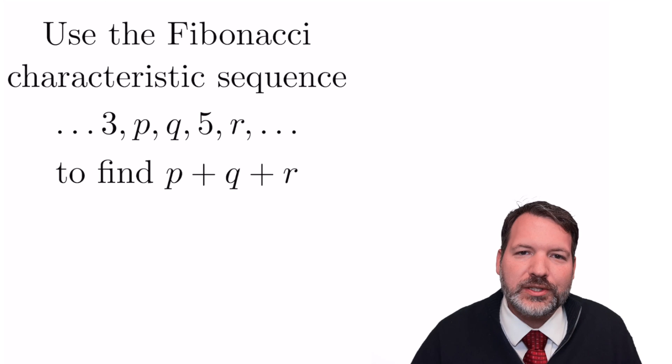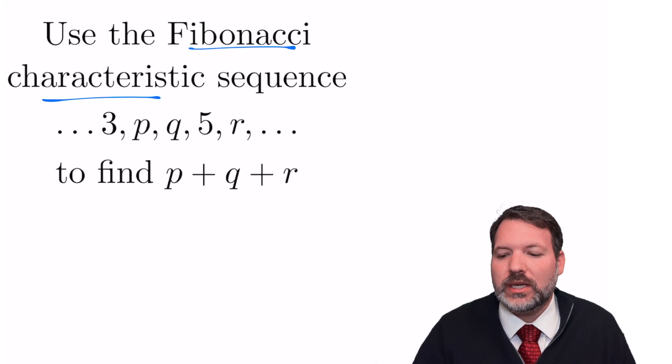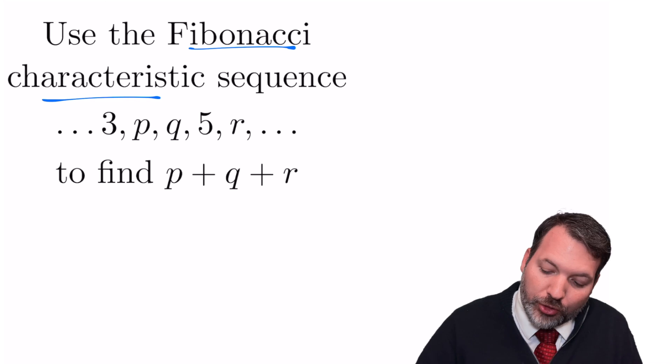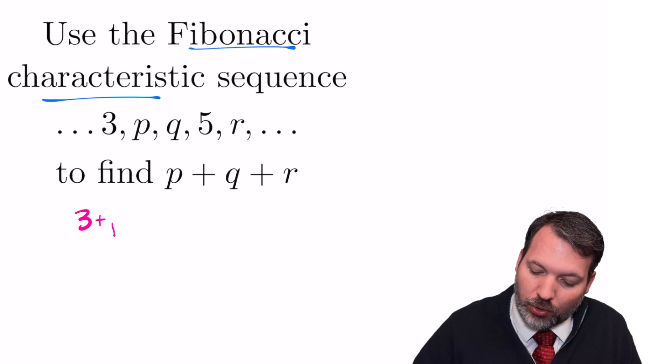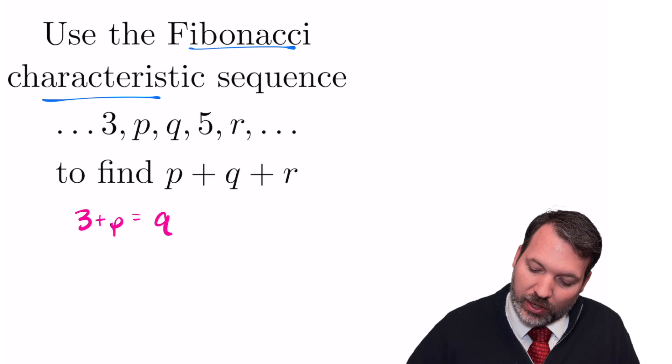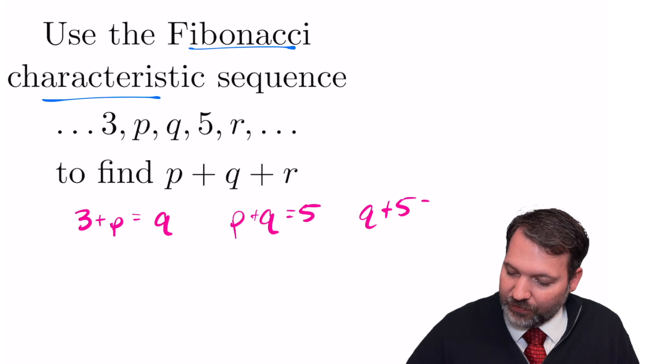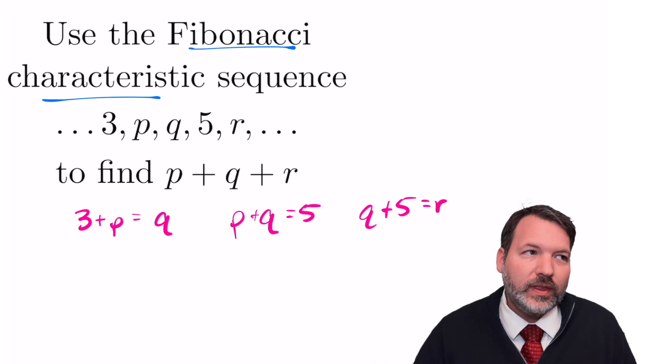In any case, that's far more than we need to be able to answer this particular question. If this is a Fibonacci characteristic sequence, all they're really telling us is 3 plus p is going to be equal to q. So this is really their hidden way to give us a system of equations. We can also say p plus q is equal to 5, and q plus 5 is equal to r.